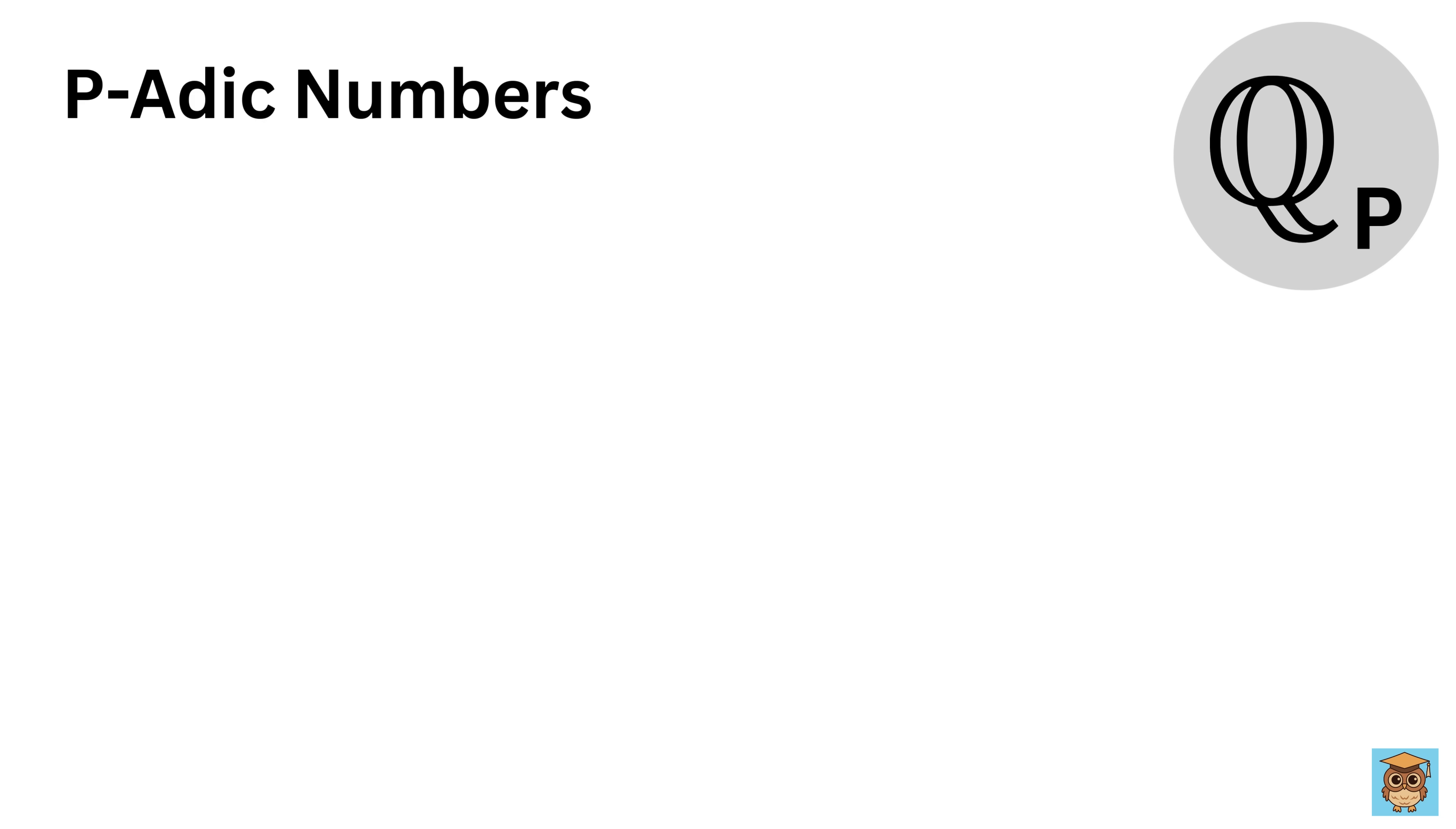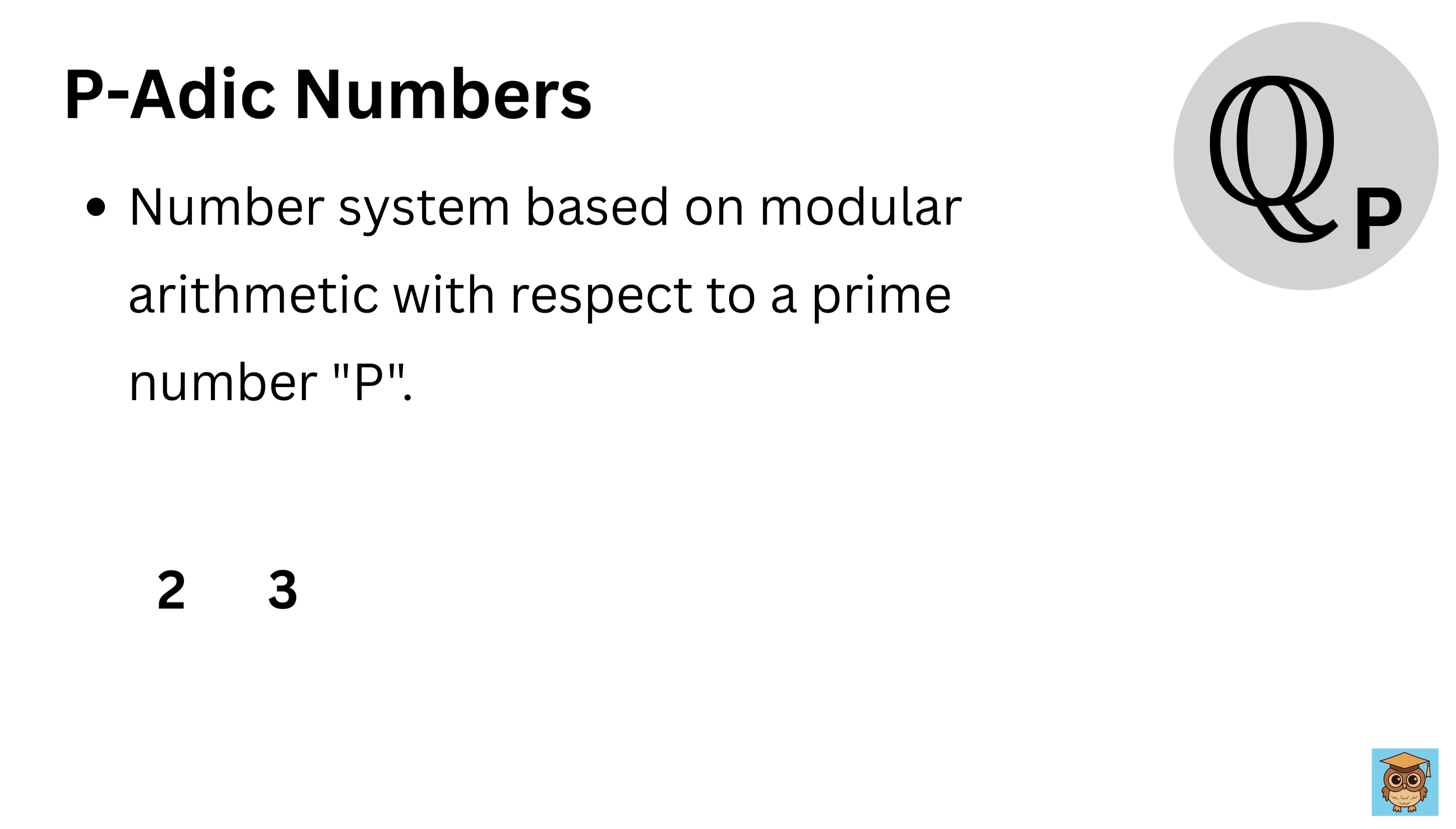p-adic numbers are a different kind of number system based on modular arithmetic with respect to a prime number p. Instead of using the usual number line where numbers like two and three are close because they differ by one, p-adic numbers focus on how numbers can be divided by powers of p. For example, if p is two, numbers like four and twelve are close in the two-adic system because their difference, twelve minus four equals eight, is divisible by a high power of two. Eight is two times two times two. Numbers like five and six, which differ by one, might be far apart because one isn't divisible by two.